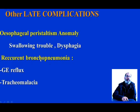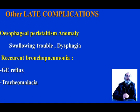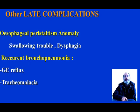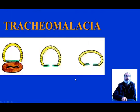Other late complications include oesophageal peristaltism anomalies and swallowing trouble or dysphagia, though in most cases we see accommodation of the oesophagus to the new situation and improvement of functional outcomes with time. We can also have recurrent bronchopneumonia due to gastroesophageal reflux or tracheomalacia. Here are examples of tracheomalacia.